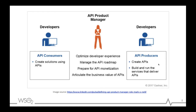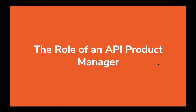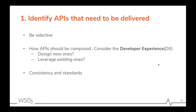Now we're going to look at these various roles that an API product manager plays in more detail. First and foremost, the API product manager needs to identify what APIs need to be delivered. In order to do that, the API product manager needs to be selective about which APIs are going to be exposed. There are certain factors to consider, such as the cost of delivering a given API, and the needs of the consumer — whether your consumers or potential customers need a given API.